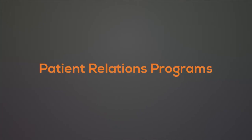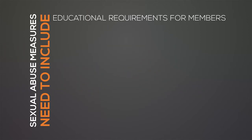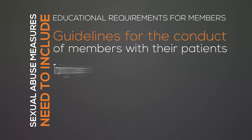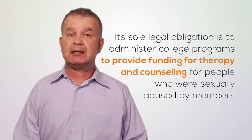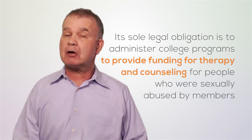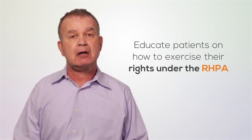The final key regulatory process is the patient relations program. All colleges must have a patient relations program, and the program must include measures for preventing and dealing with sexual abuse of patients. Sexual abuse measures need to include educational requirements for members, guidelines for the conduct of members with their patients, training for college staff, and the provision of information to the public. While the Code does not specifically require patient relations committees to manage patient relations programs, in many colleges the patient relations committee has been assigned this role. The statutory role of the patient relations committee is quite limited — its sole legal obligation is to administer college programs to provide funding for therapy and counseling for people who were sexually abused by members. Some colleges are now moving towards developing programs to educate patients on how to exercise their rights under the RHPA, and patient relations committees are often taking a lead in such activities.